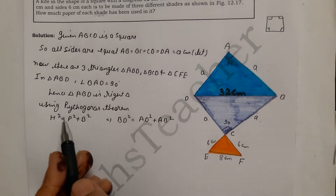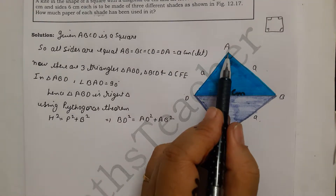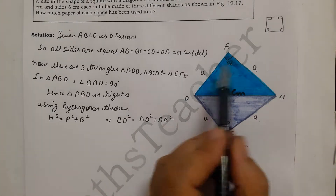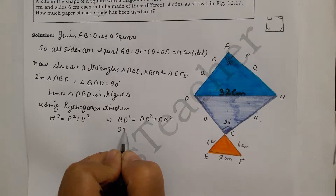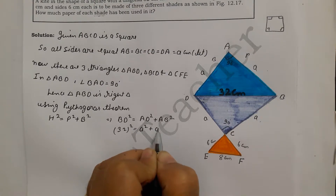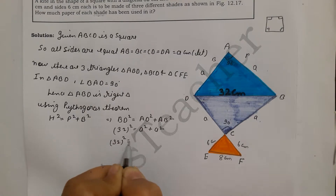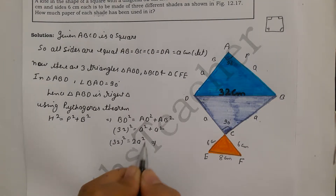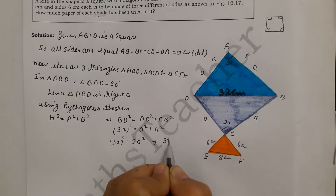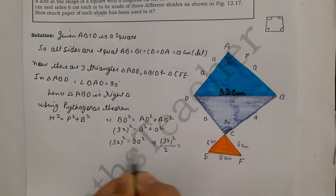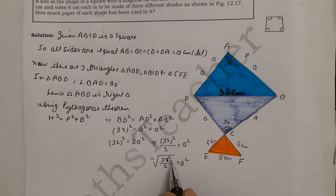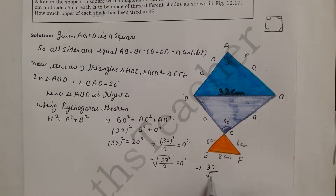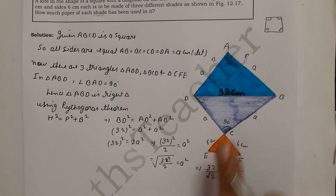Applying the Pythagorean theorem: BD² = AD² + AB², which gives 32² = a² + a². So 1024 = 2a², which means a² = 32²/2 = 512. Therefore a = 32/√2.